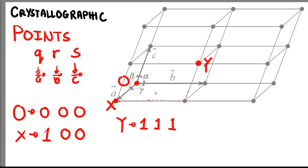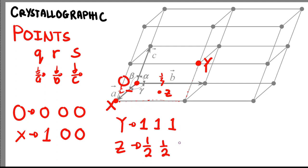We can also have fractions. For example, for point Z, let's say this is 1/2 along A and 1/2 along B. Point Z will then be 1/2, 1/2, along B, and S will be 0.